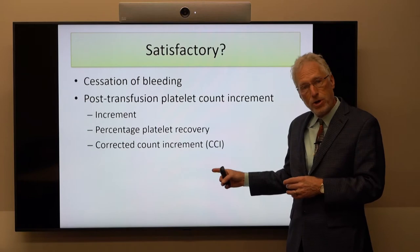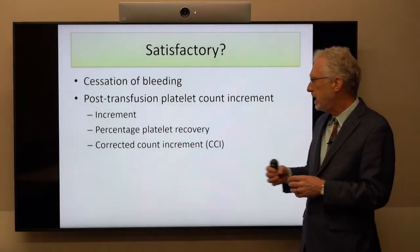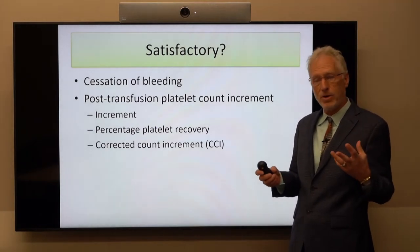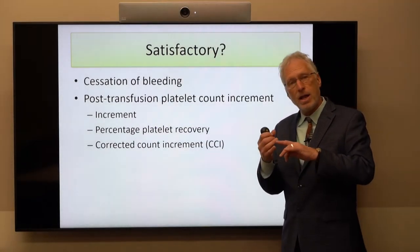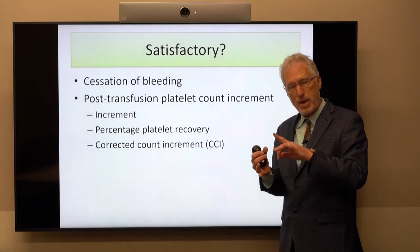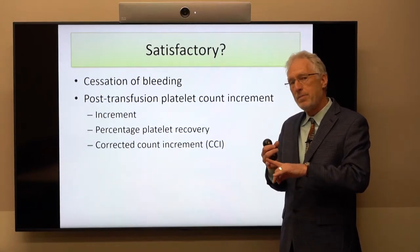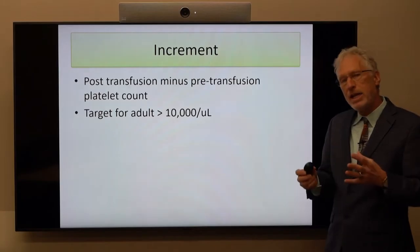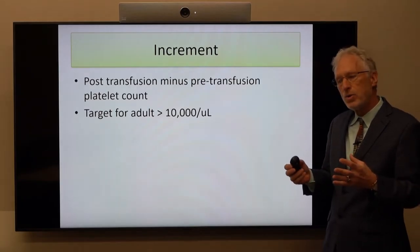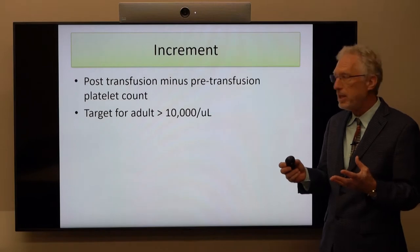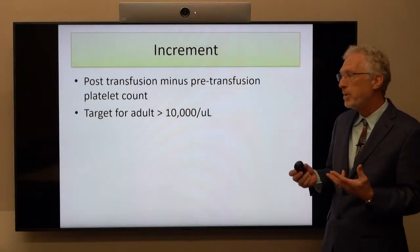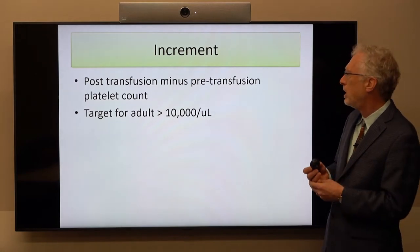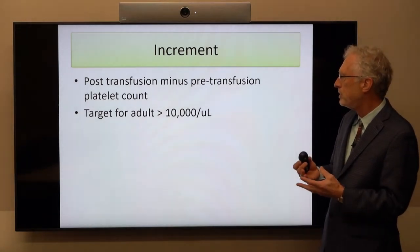The third approach, commonly used in clinical trials and in our institution, is to calculate a corrected count increment, which takes into account not only the dosage of platelets in the bag but also the body surface area of the patient as a way of estimating blood volume. In most settings, the easiest way to assess the success of a platelet transfusion is just looking at the increment in the platelet count, and this is the way most clinicians look at their patients' response.